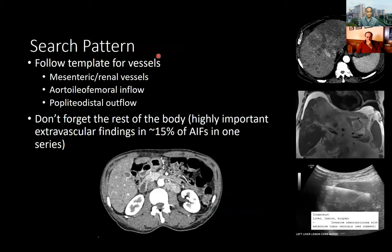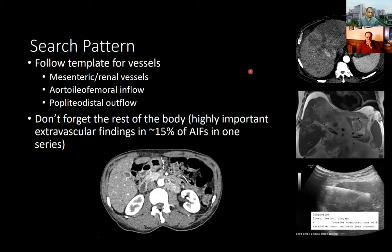My search pattern is to actually ignore the fact that it's a runoff and read the abdomen and pelvis CT like a normal abdomen and pelvis CT. Our template then goes through all of the vessels to encourage trainees to address every vessel. In one series, they encountered highly important extravascular findings in about 15% of cases — things like lymphadenopathy or an invasive adenocarcinoma of the liver identified incidentally on runoff. The key point: do not treat this as just a vascular study.